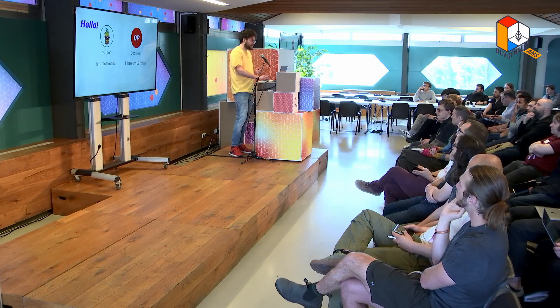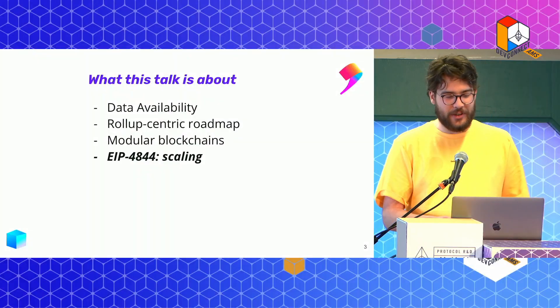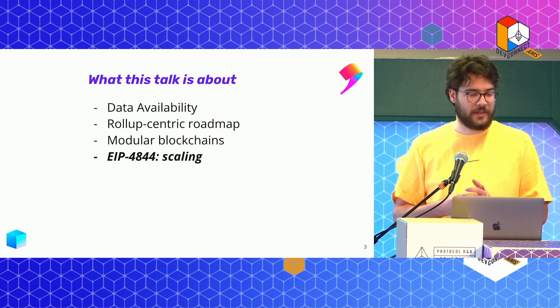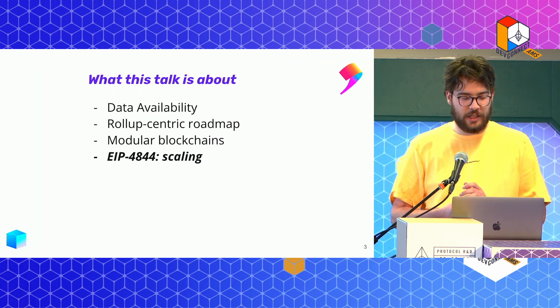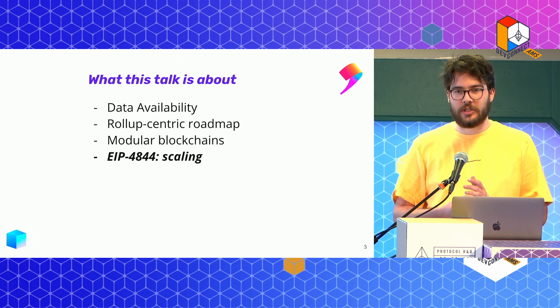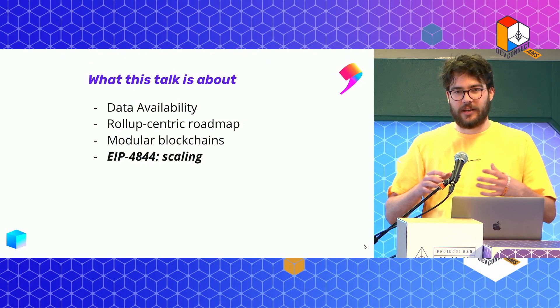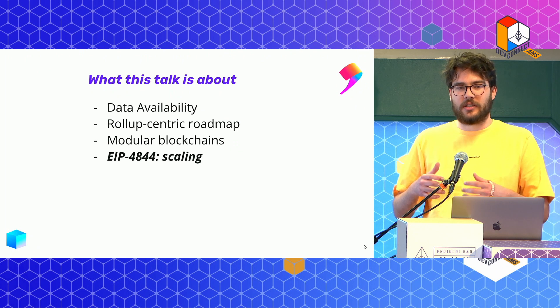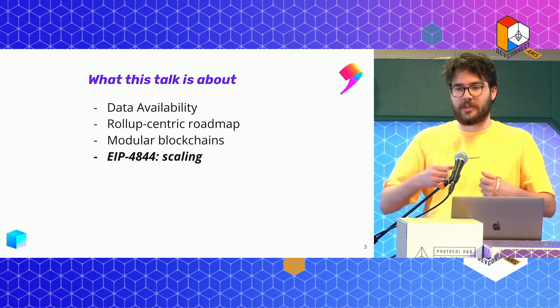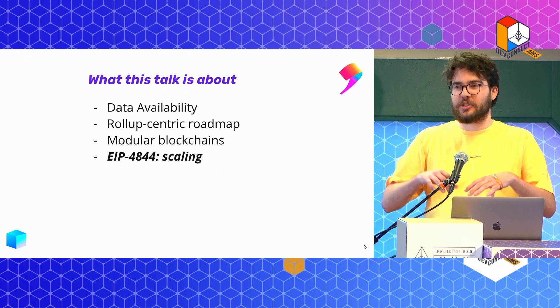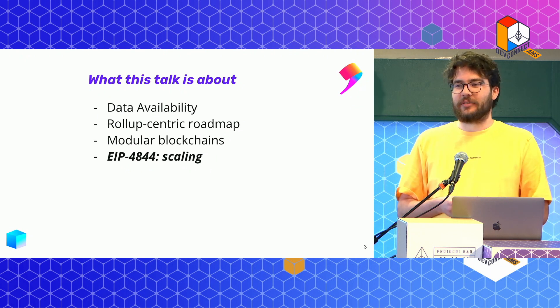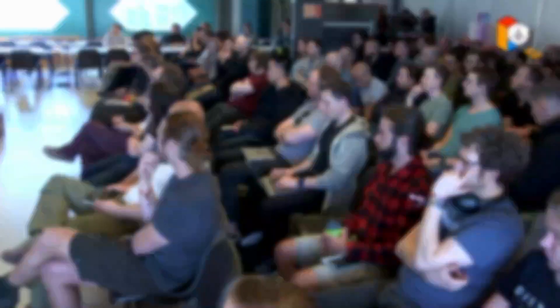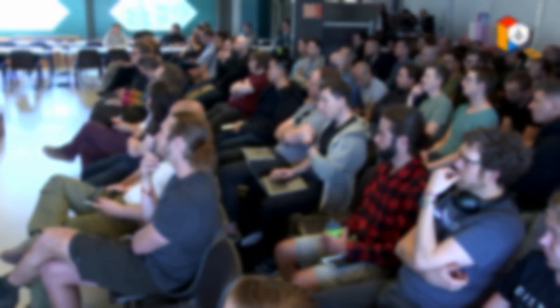Still working on the same thing — sharding all the way. This talk is about data availability. We'll go briefly through the basics, then the rollup-centric roadmap, and the modular blockchain design. If you take the higher-level picture, this is really about tearing the system apart so it actually becomes manageable. Nobody really understands all of Ethereum anymore, but the better the modular design and interfaces are, the better we can scale it.